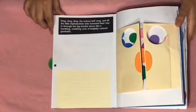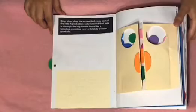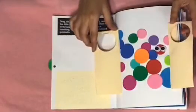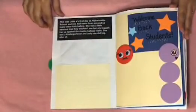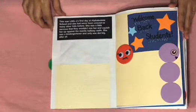Ding ding ding! The school bell rang and all the little Alpha Baubles kids funneled their way in through the big double doors like a tumbling, rumbling river of brightly colored gumballs. This was Little A's first day at Alpha Baubles School and she had never been around so many other kids before.